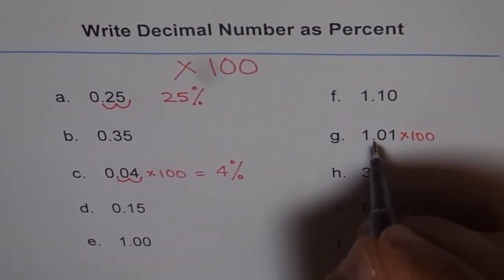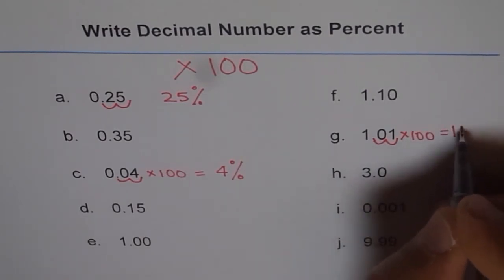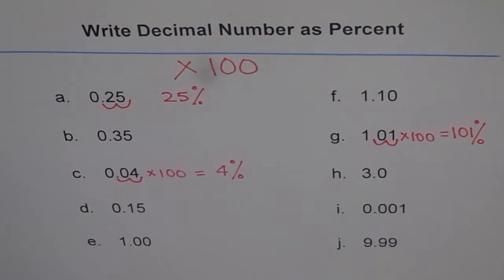It goes two places to the right and you get 101%—101%. Do you see that? That is how it is. Now there are some small numbers, let me do this one for you.